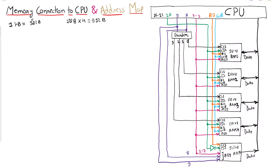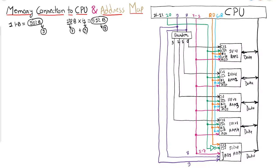Now, if you want to specify any one location out of 512, how many bits are required? 9 bits. Here also, out of 512 locations, 9 bits are required. For the RAM side, to specify any location out of 128 you need 7 bits, and to select any one of the 4 RAM chips you need 2 bits. So 7 plus 2 equals 9 bits total.